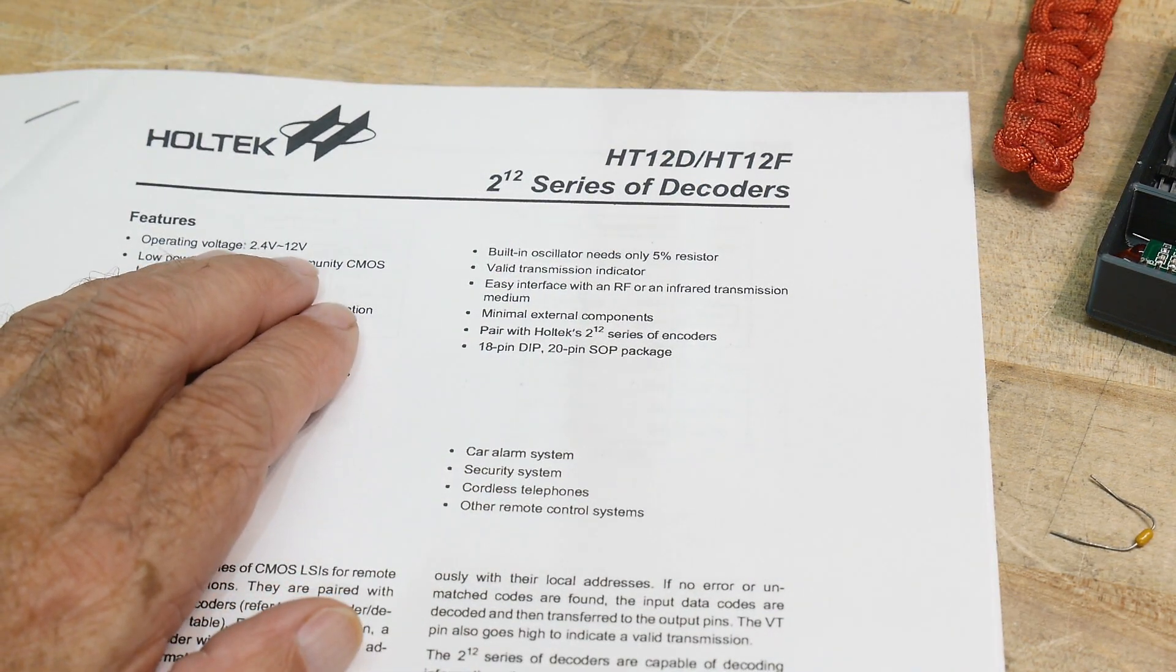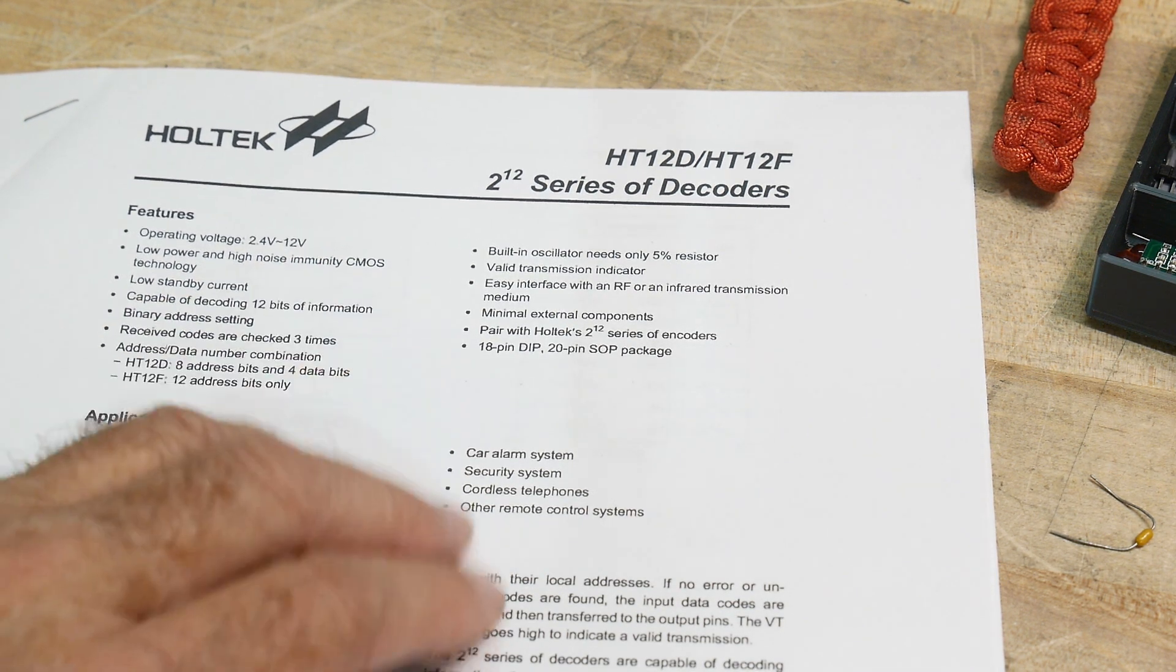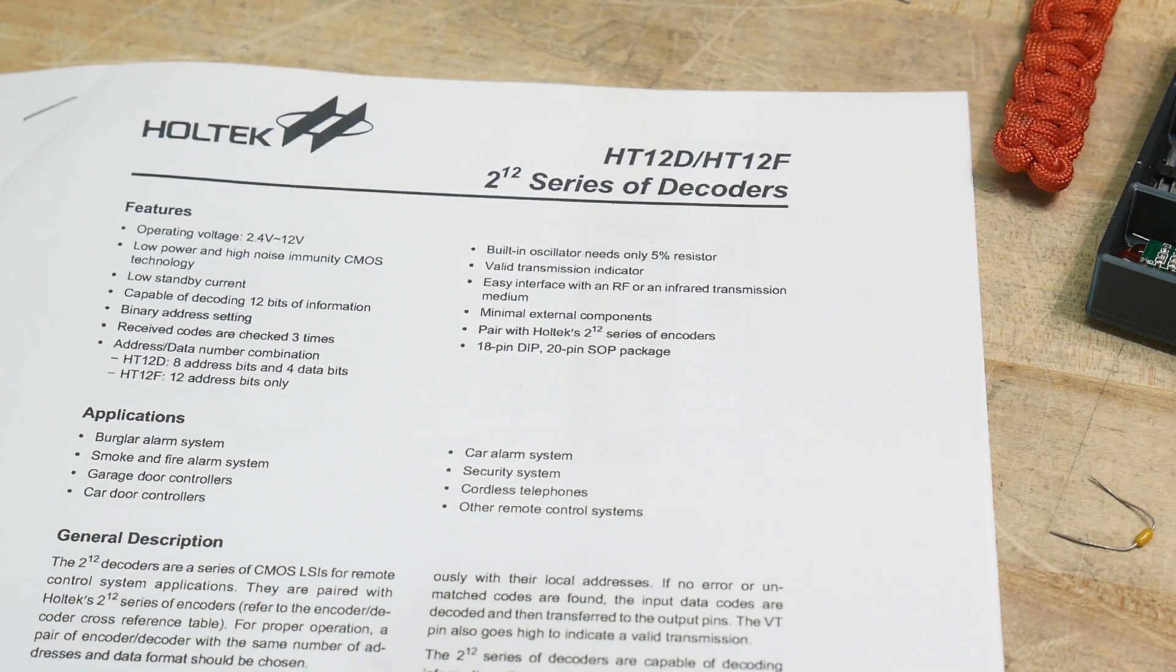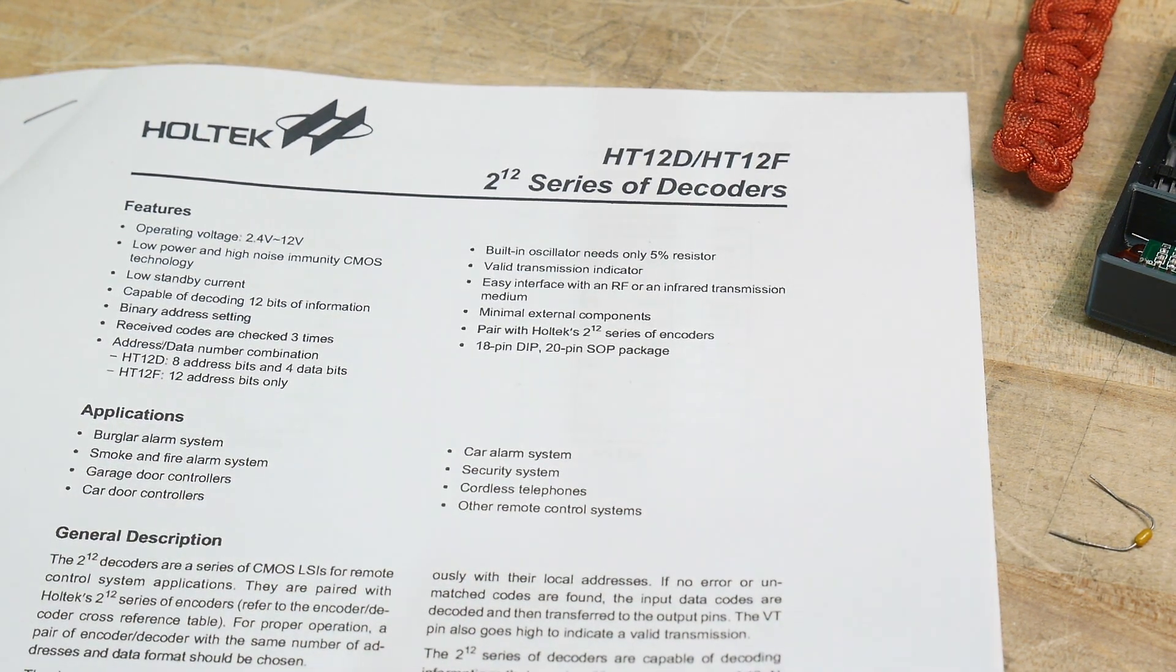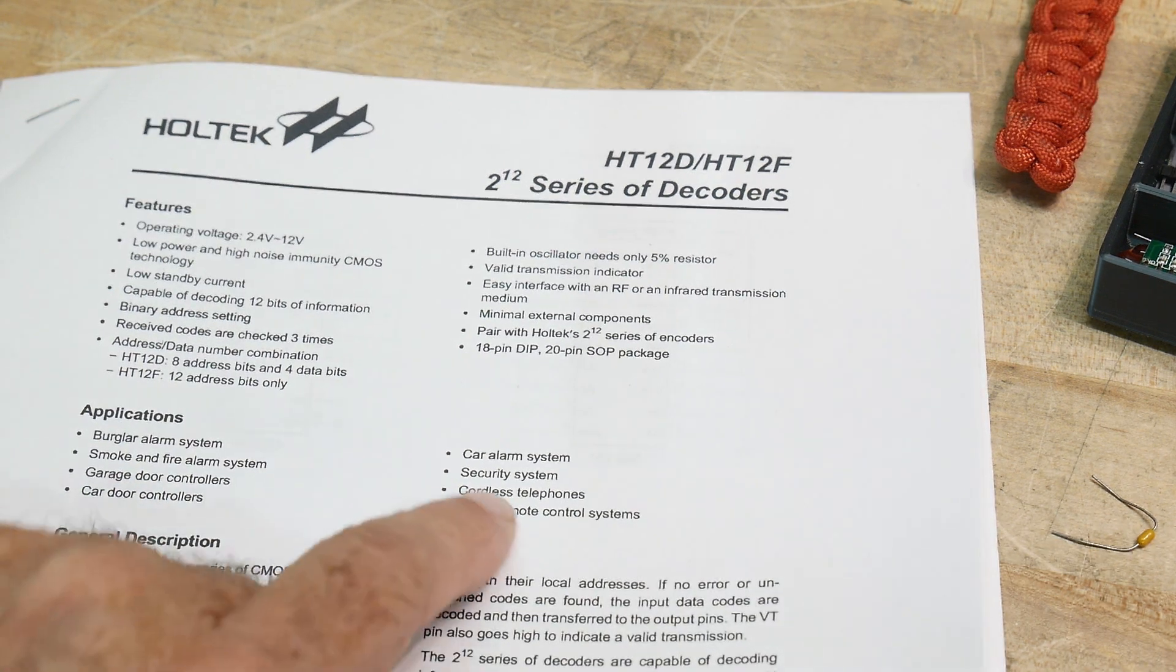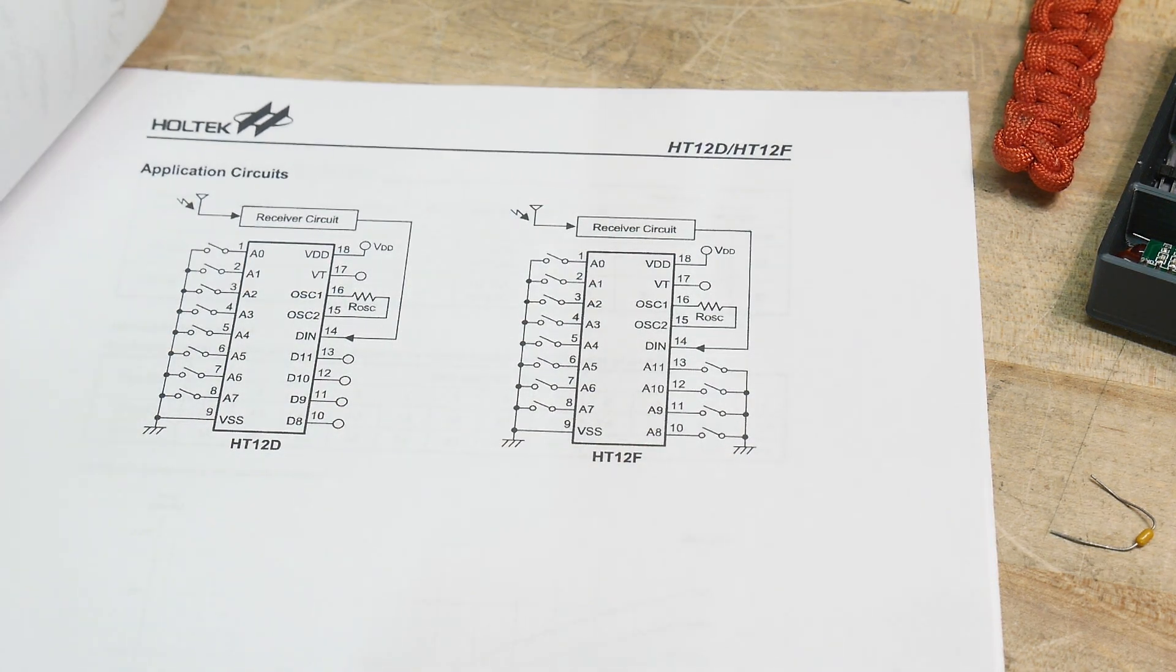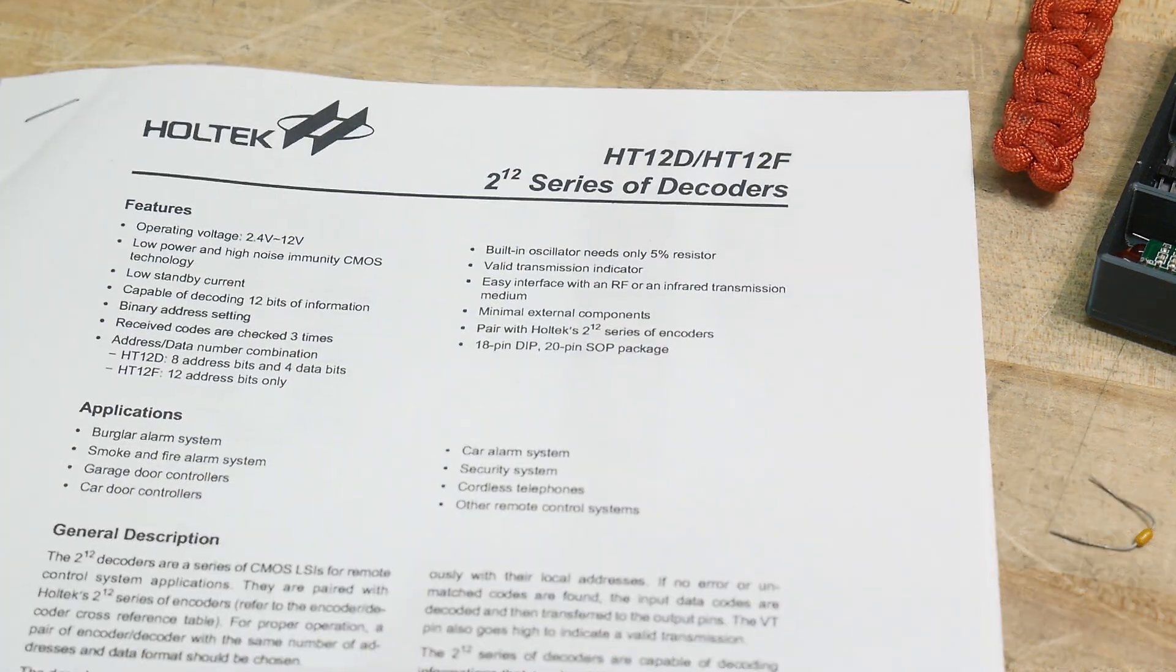What does all this mean? They can operate from 2.4 to 12 volts. CMOS. All right. So the way that they work, let's see here, applications: burglar alarm, smoke detector, garage door. Yeah. If you want to send information and you don't want people to hack it, you want to have it secret, you use one of these chips.